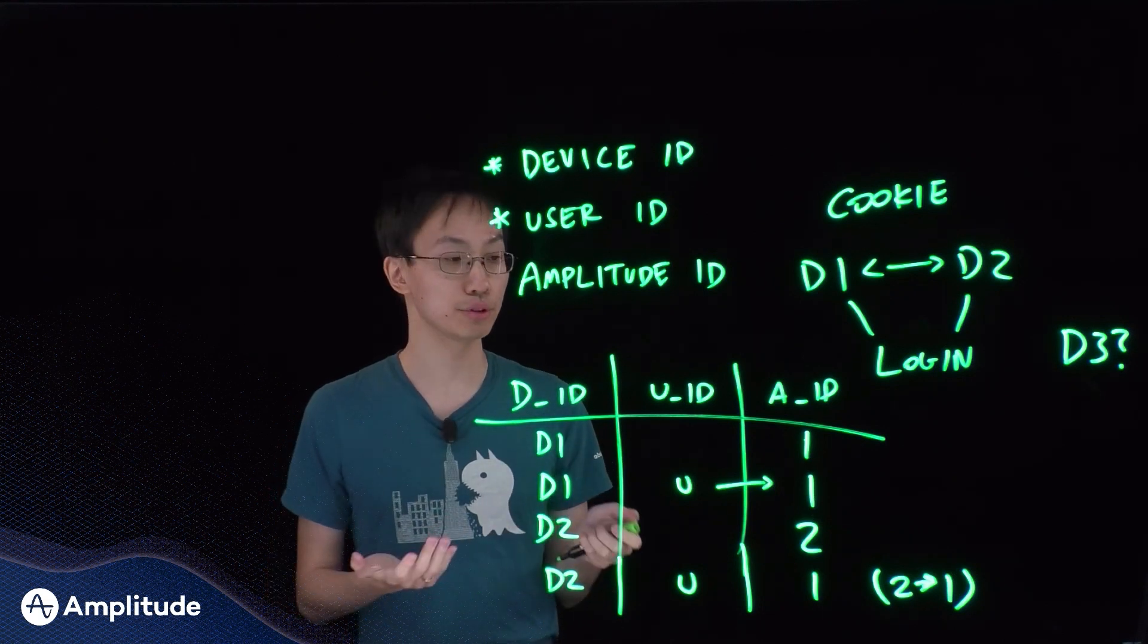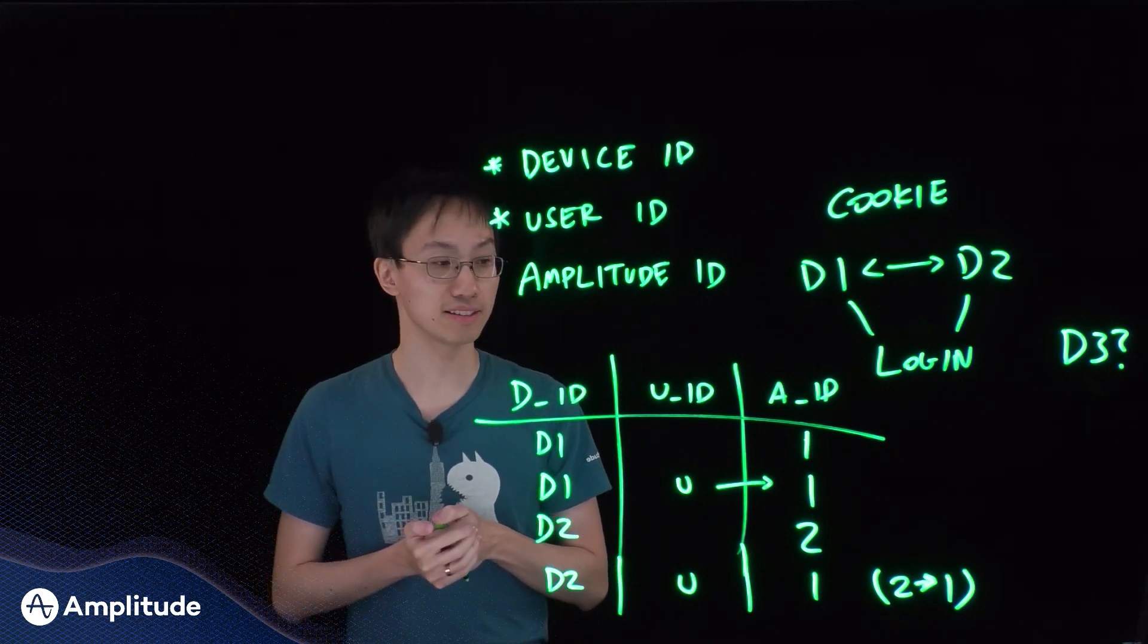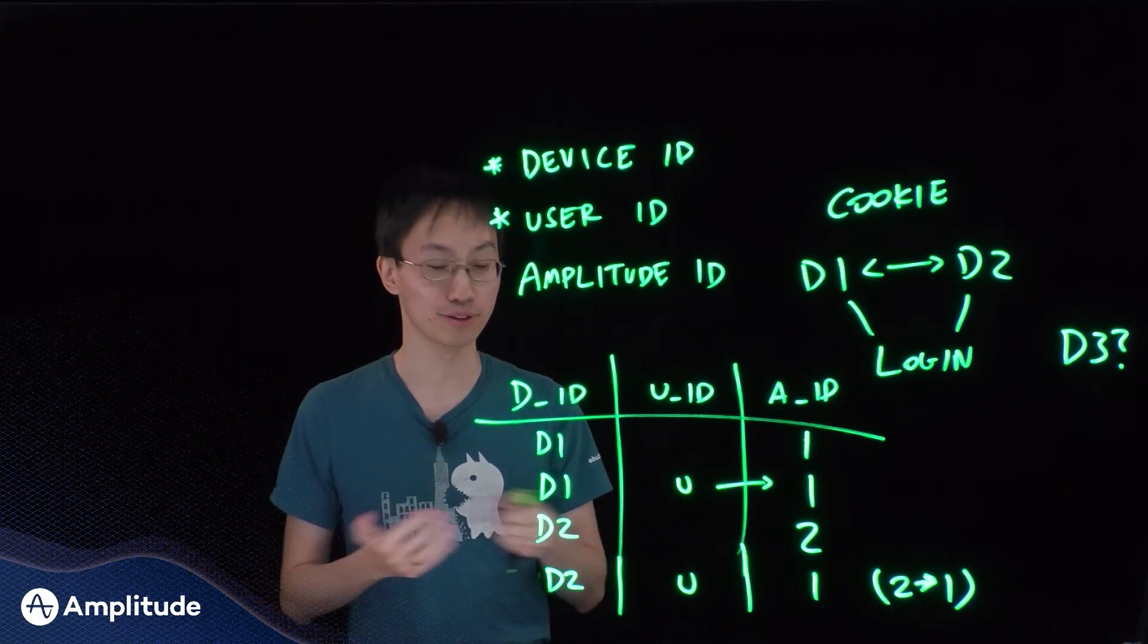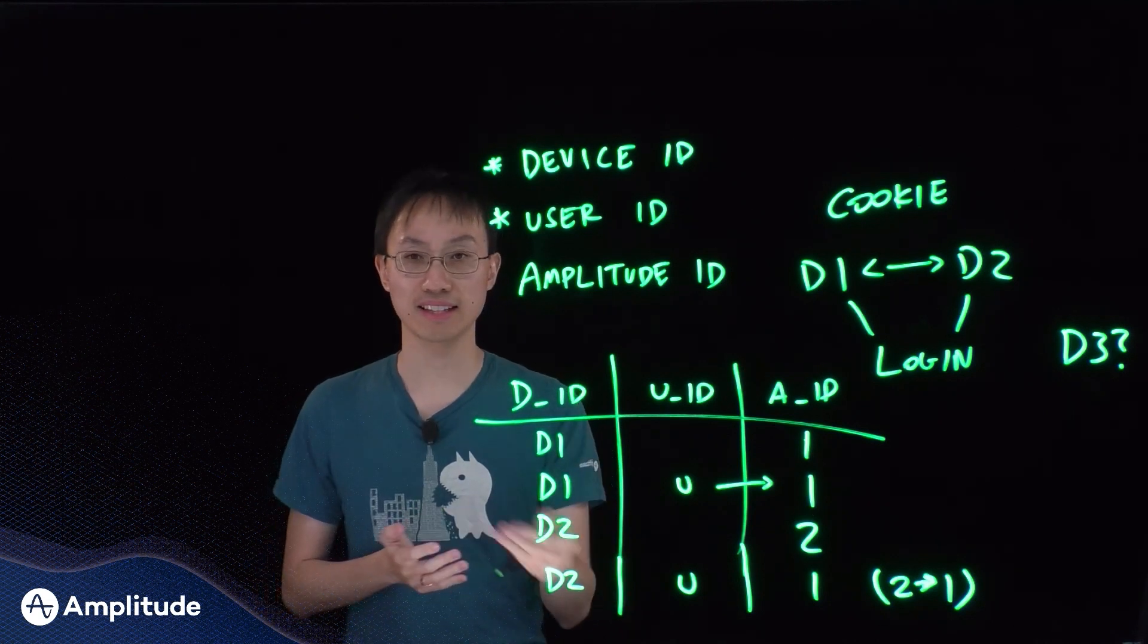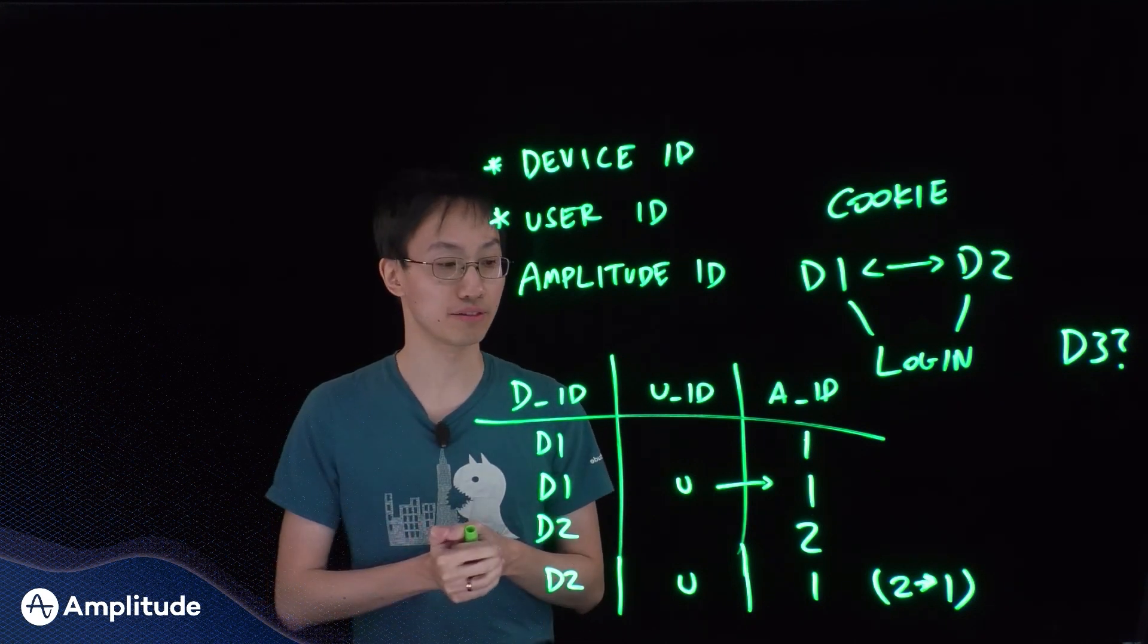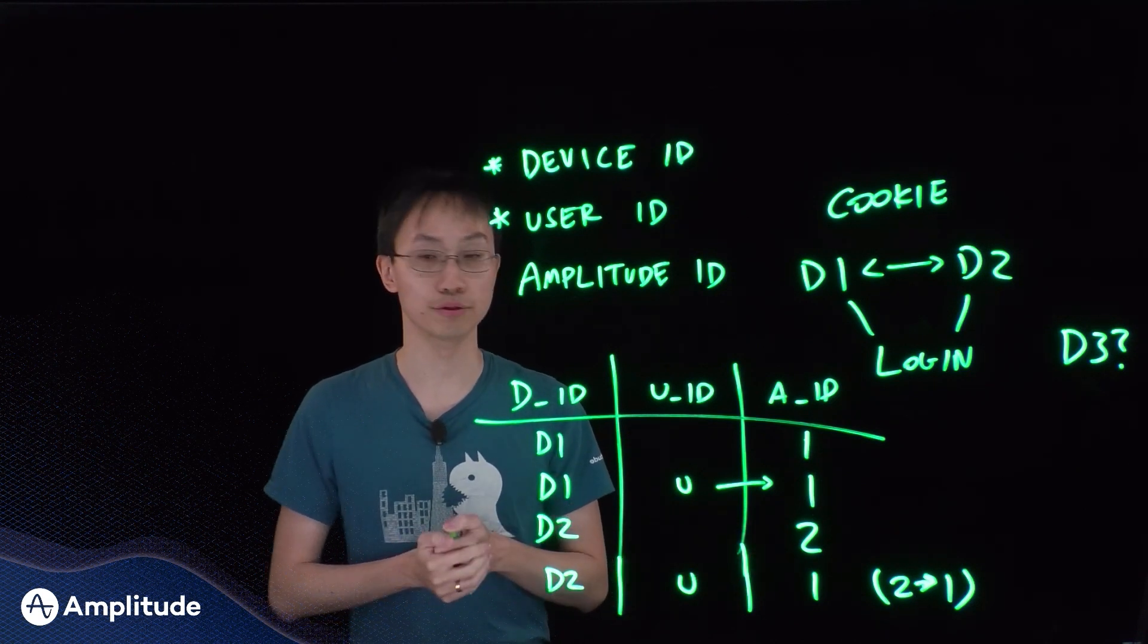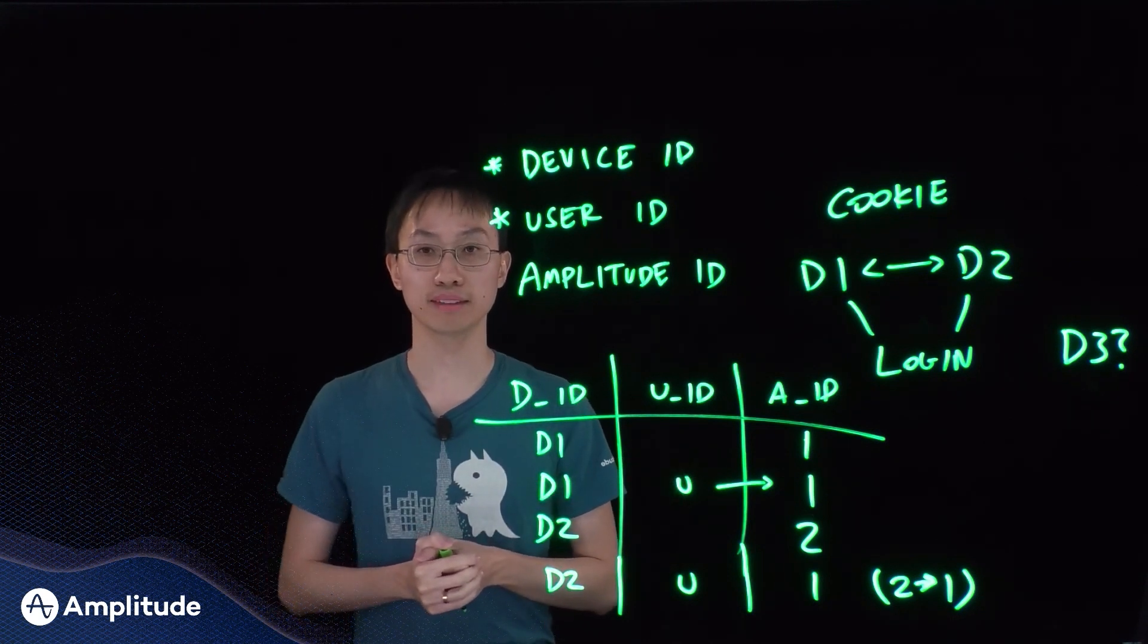And so the Amplitude system uses this mechanism, and we've processed nearly 100 billion identities. Obviously, there are more identities, more than one identity per person in the world, because if you're using different browsers, different apps, you end up with different device identifiers. And we are able to serve queries across trillions of events using this identity resolution mechanism and the application of those joins at query time in under a few seconds. And so that's how we do identity resolution at Amplitude. Thanks.